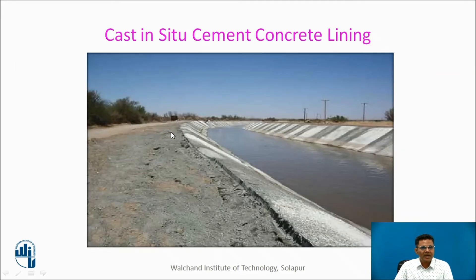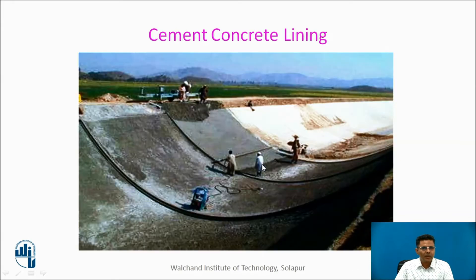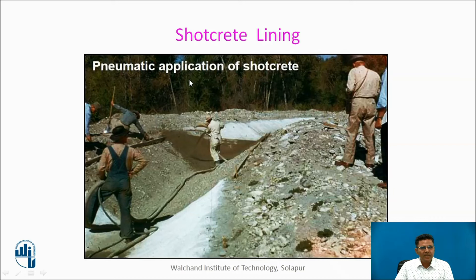Here we find a cast in situ cement concrete lining — this lining is cast at the site only. We see the cross section of a canal designed for higher velocities. This is shotcrete lining, with a pneumatic application of shotcrete for its construction.